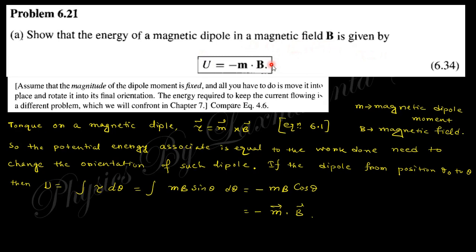The next question says: show that the energy of a magnetic dipole in a magnetic field is given by U = −m·B. From equation 6.16, we know the expression for torque on a magnetic dipole due to a magnetic field: τ = mB sinθ. Since work done equals torque times angular displacement, W = ∫τ dθ. Substituting τ = mB sinθ and integrating gives U = −m·B.